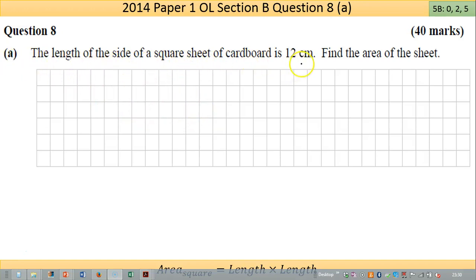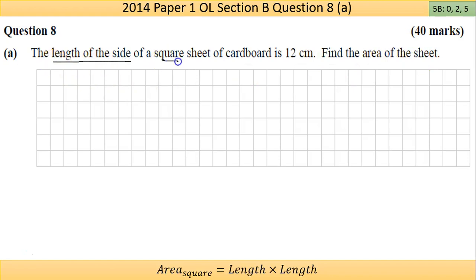Starting Part A now. The length of the side of a square sheet of cardboard is 12 centimeters. Find the area of the sheet. I would suggest to try draw this to get your head around the scenario. So it's a square sheet of cardboard, every side around this is 12 centimeters.